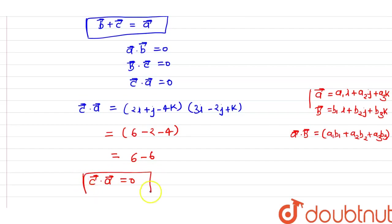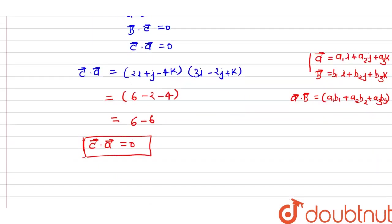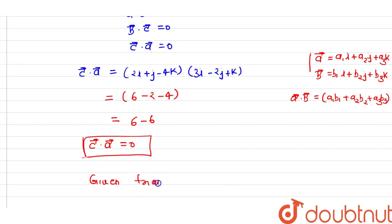Since the dot product of vector c and vector a is zero, these two vectors are perpendicular to each other. Therefore, we can say that the given triangle is a right angle triangle.